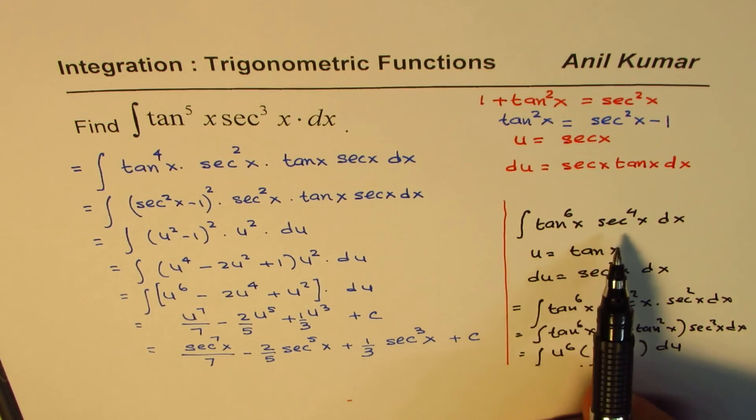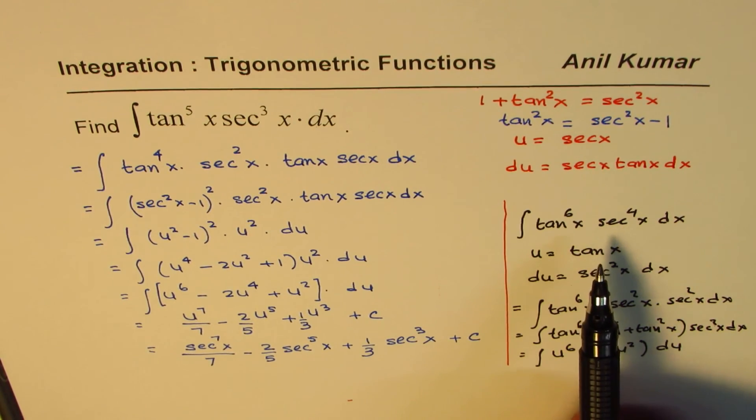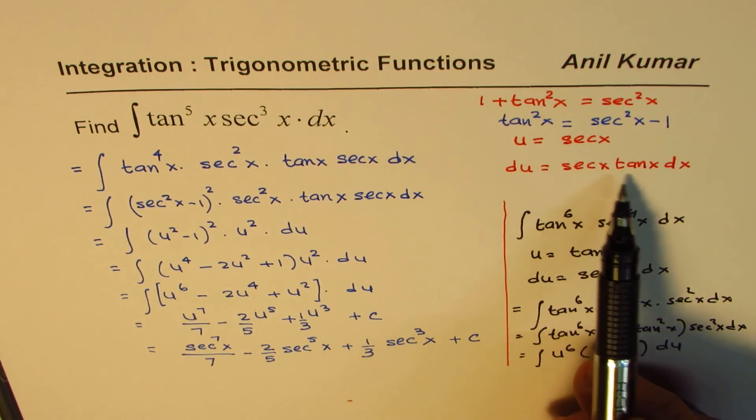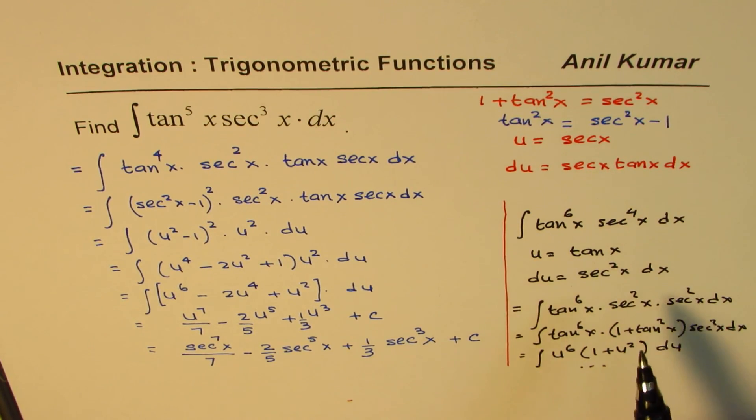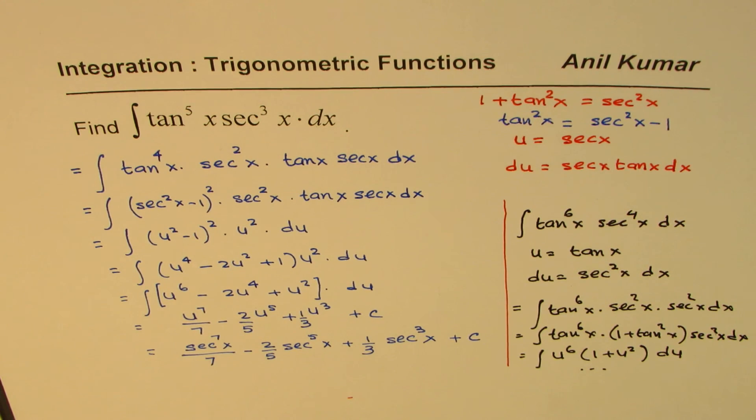If you are given product of tan and secant with any combination of powers, we need to take the advantage of their derivatives. Derivative of secant x is secant x tan x. And derivative of tan x is secant square x. And based on that we can decide what should be u and how should we rearrange our equation to find the integral.